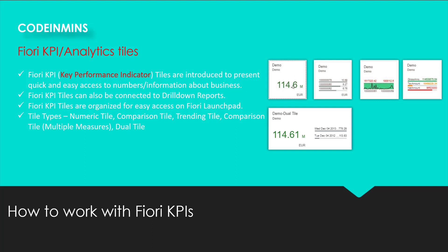KPI tiles are of different kinds: the numerical tile, the comparison tile which shows three different values, the trending tile which shows upper and lower trend values between two values, a comparison tile with multiple measures, and also a dual tile which has both a comparison and a numeric tile combined in one big tile. We will be seeing how to create most of these tiles in upcoming videos.